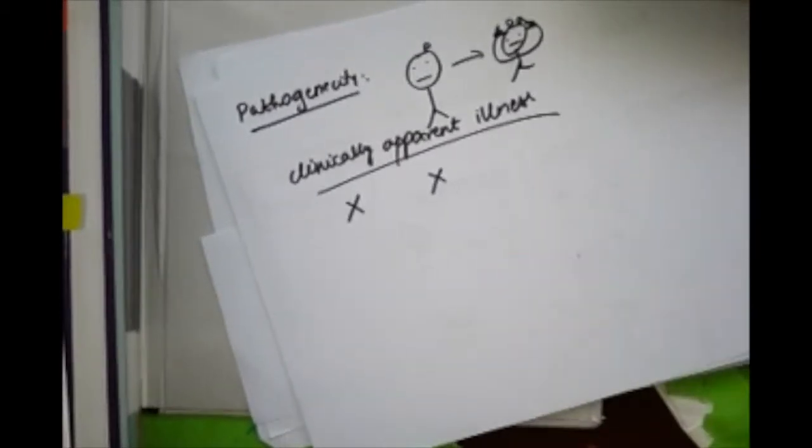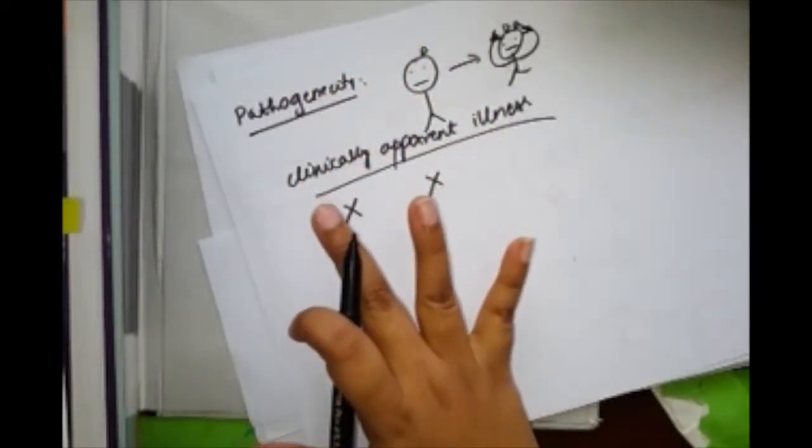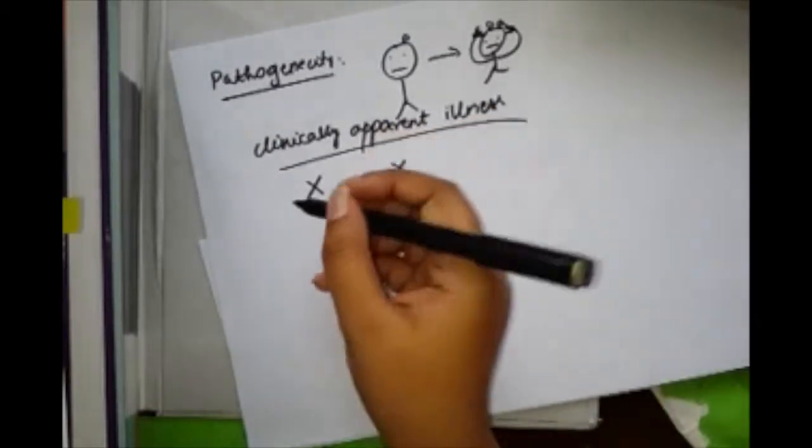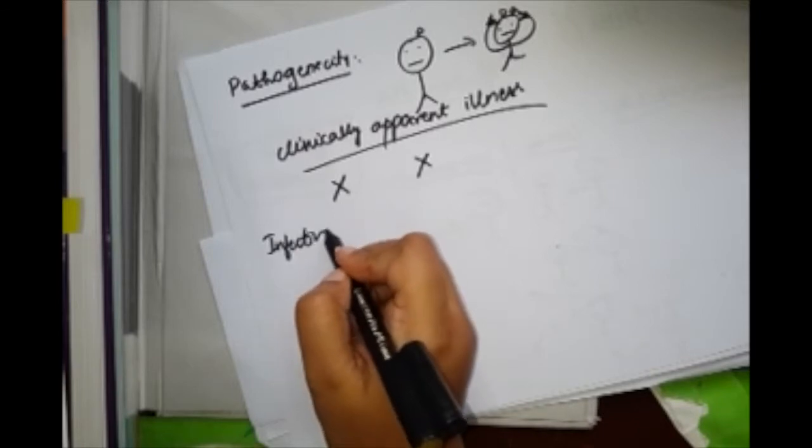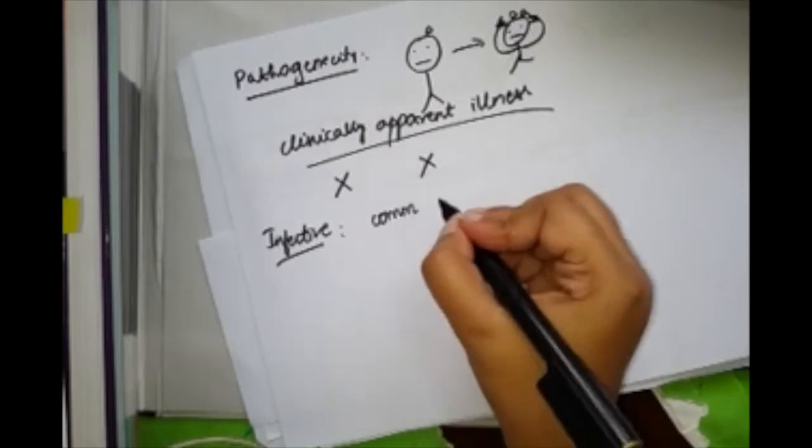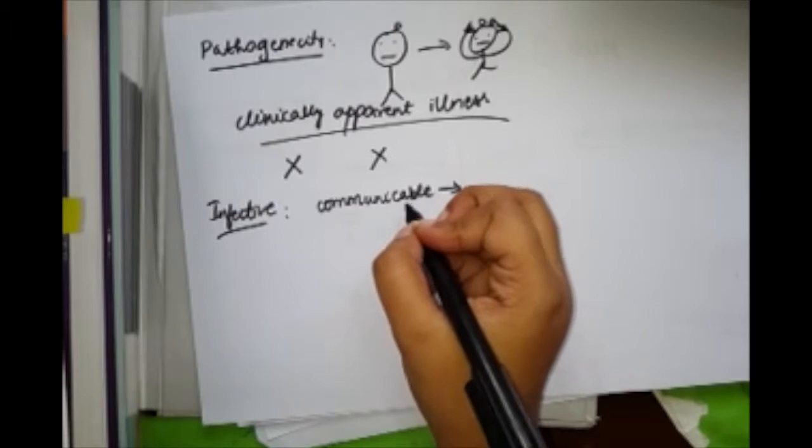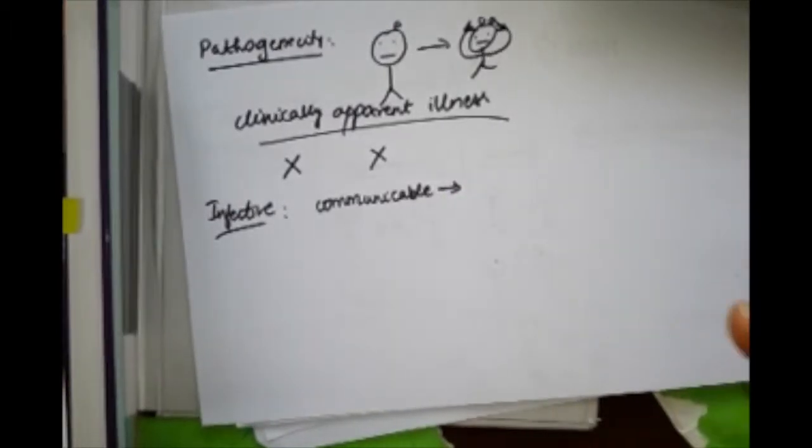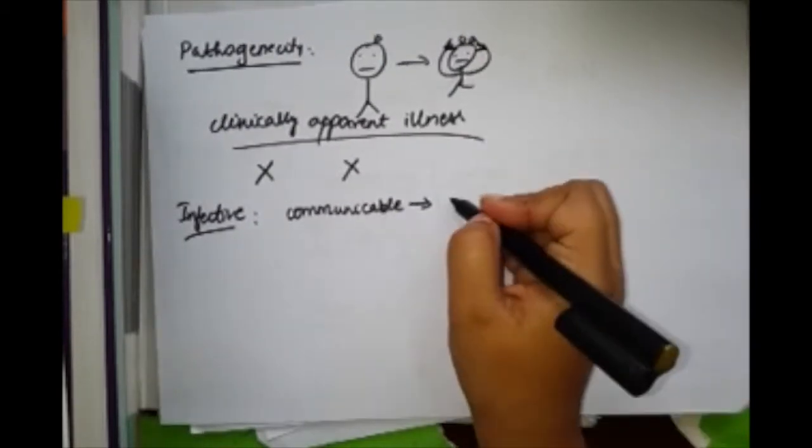First, any infective agent becomes communicable. After it becomes communicable, it has the ability to get transmitted. That is your communicable. After it is communicable, it will come sit on your head and multiply—that is, it will become infective.